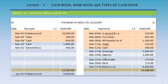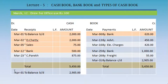Drew for office dues Rs. 500. We have drawn cash from the bank, so first in the bank account we are foregoing the money — on the credit side: March 12, by cash, Rs. 500. We are receiving the cash, so in the cash book we record it on the debit side: March 12, to bank, Rs. 500.